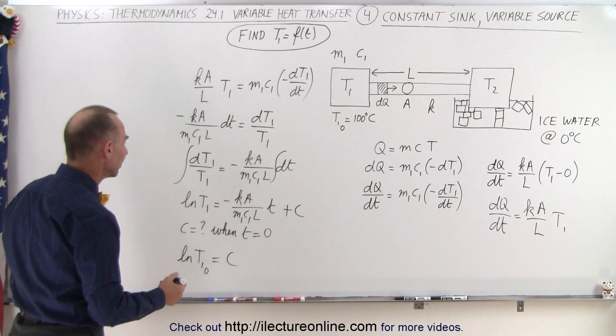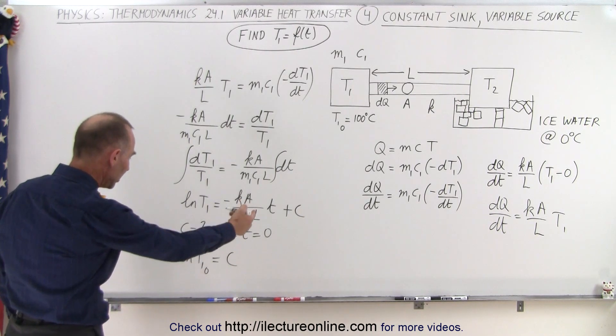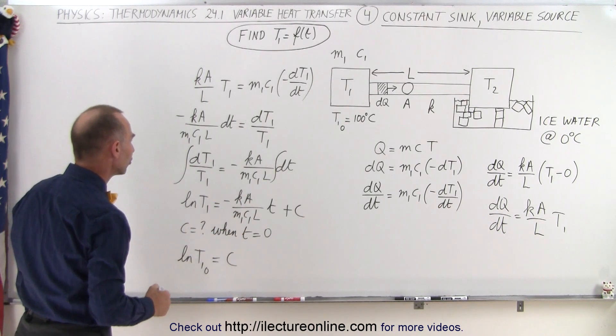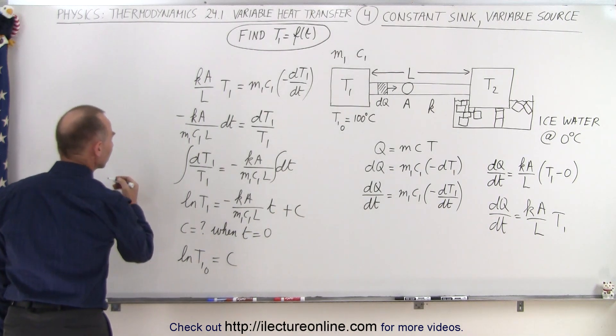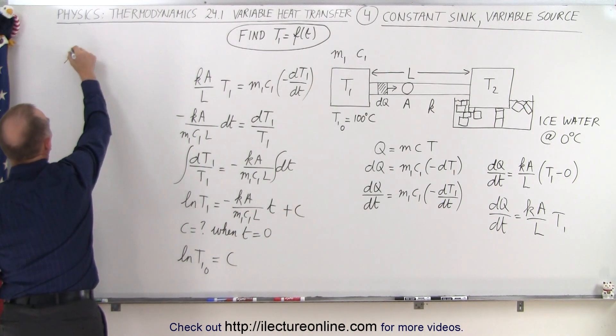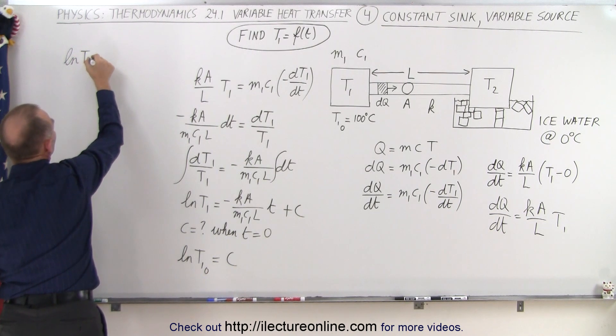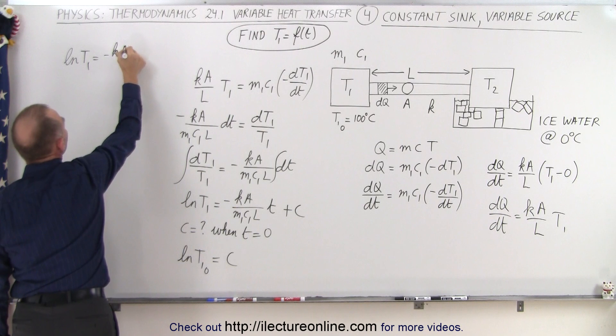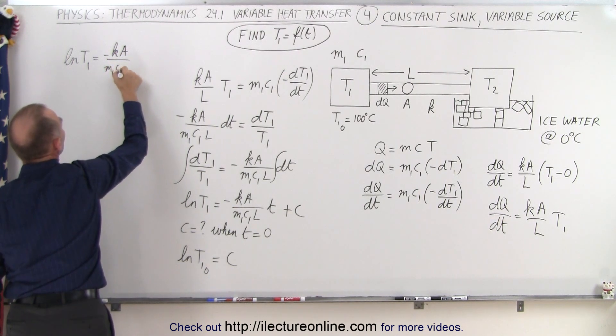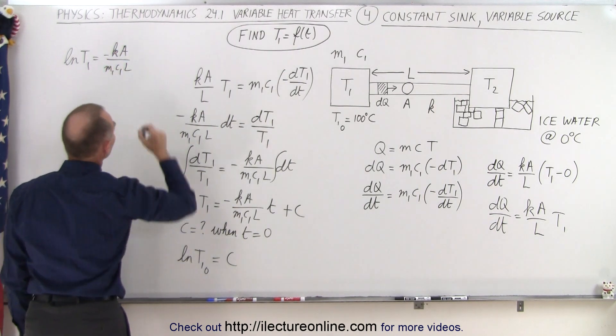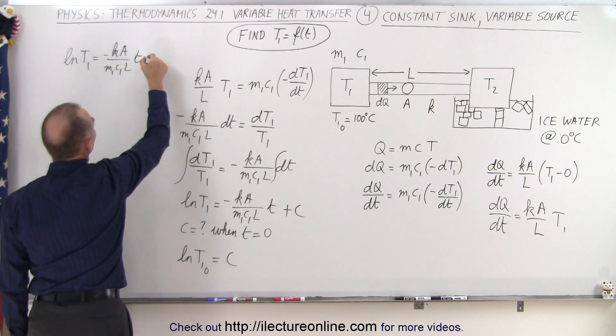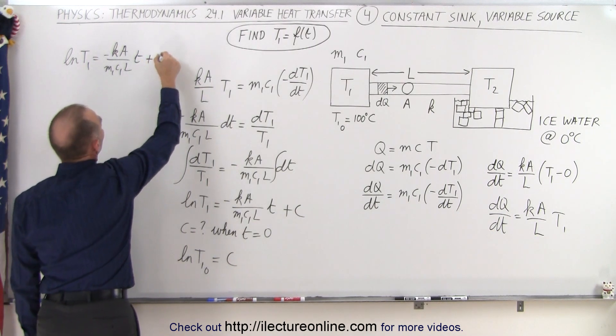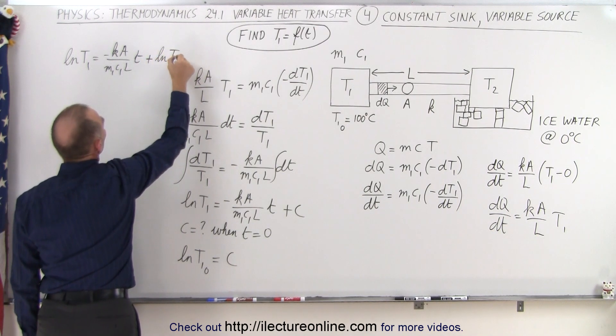And so therefore, it turns out that c1, or c, is equal to the natural log of the initial temperature. So let's move over here, now we can write that the natural log of t1 is equal to minus Ka over M1C1 times L times t plus the natural log of t1 initial.